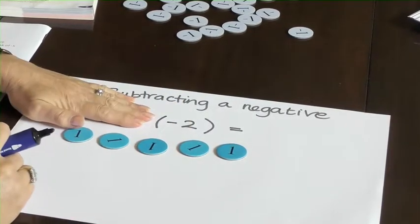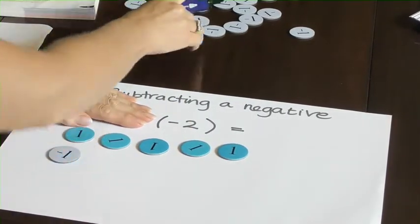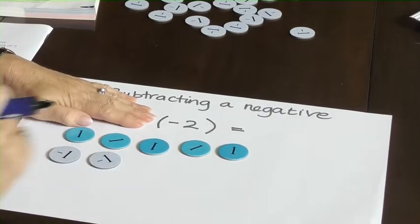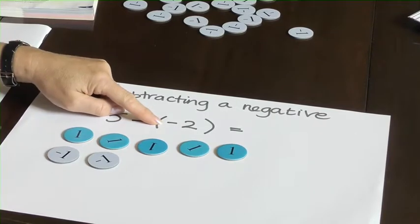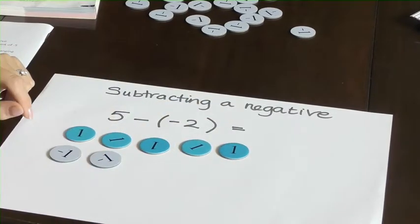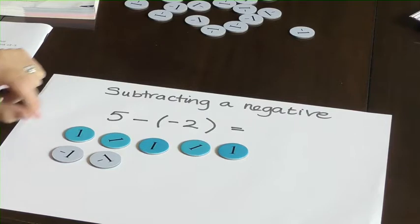Let's model the negative 2, so we have 2 negative 1 disks. But this is 5 take away negative 2, we're not adding them. So we need to change the direction of these two.